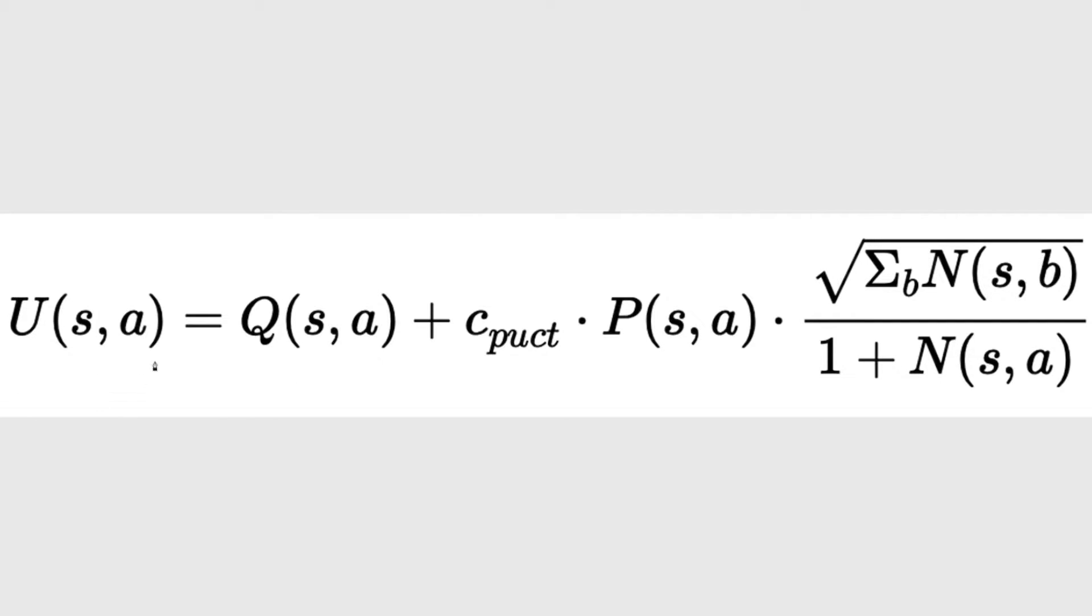So the upper confidence bound is equal to the Q value of the state-action pair. This is the average reward gained after taking an action from state S. And then we add on the product of these three terms. So CPUCT is just a hyperparameter we can tune. The higher this is, the more the model will explore. P(S,A) is the initial probabilities of taking action A from state S predicted by the neural network.